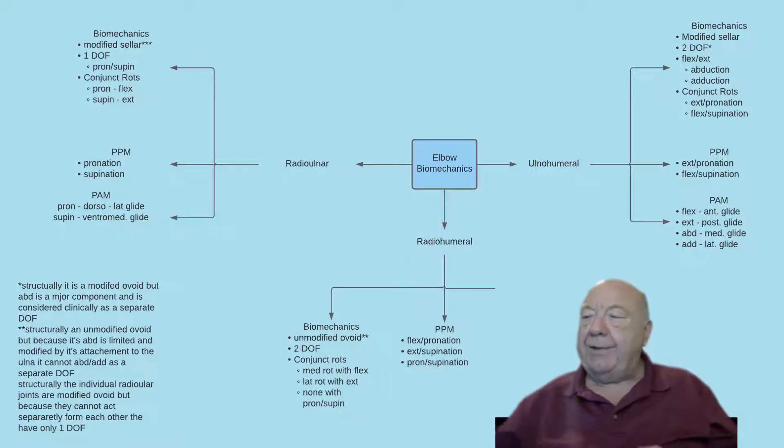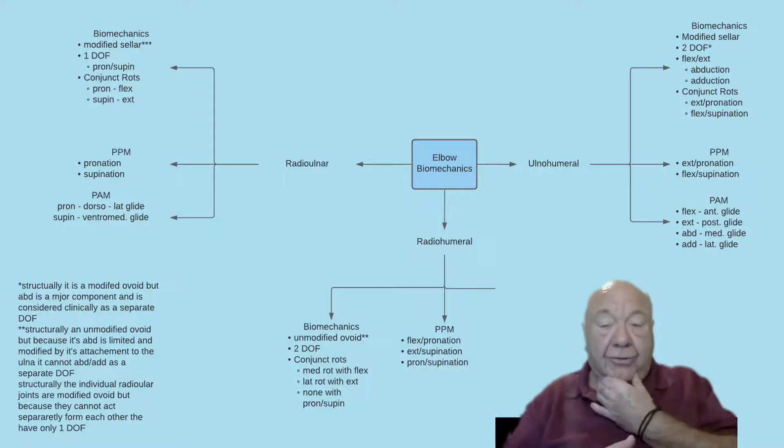For the radial humeral joint, we're looking at biomechanics. So this now is structurally an unmodified ovoid. If you look at it, you'll see that the capitellum is almost a perfect sphere, and the radial head is almost the inverse of this with concavity.